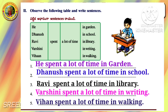Write as many sentences as you can using the following table. He will play cricket. Abhi will sing songs. Muzib will draw pictures. Kavita will sing songs. They will play cricket.